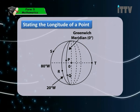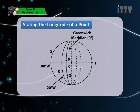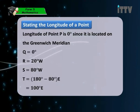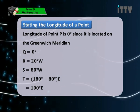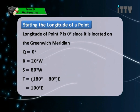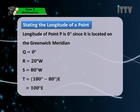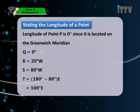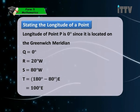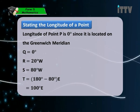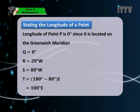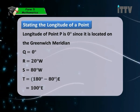Looking at a specific diagram with points P, Q, R, S, T and given longitudes of 20 degrees west and 80 degrees west: point P is zero degrees since it lies on the Greenwich meridian; Q also has zero degrees longitude; R has 20 degrees west; S has 80 degrees west. Point T's longitude has not been given, but it can be found: longitude of T = 180 degrees minus 80 degrees east, which gives 100 degrees east.